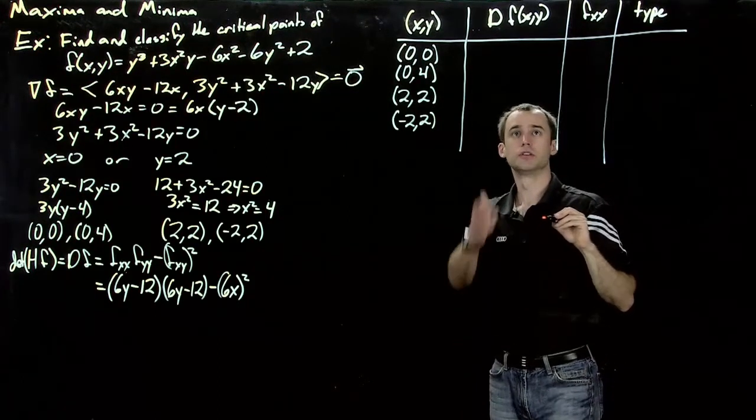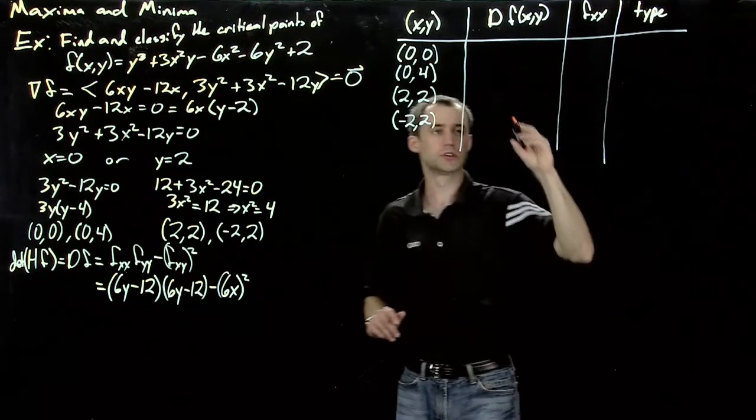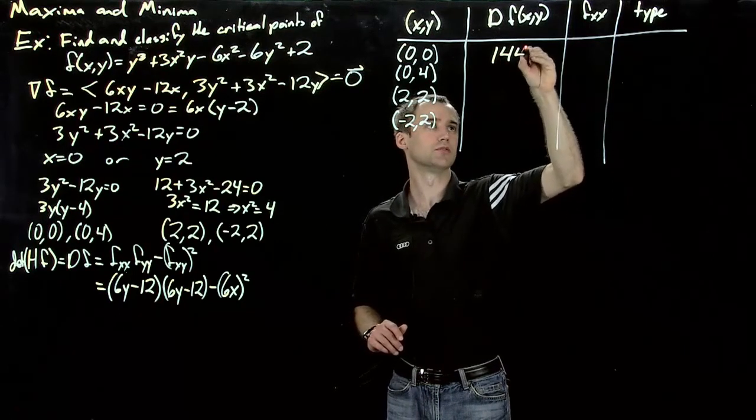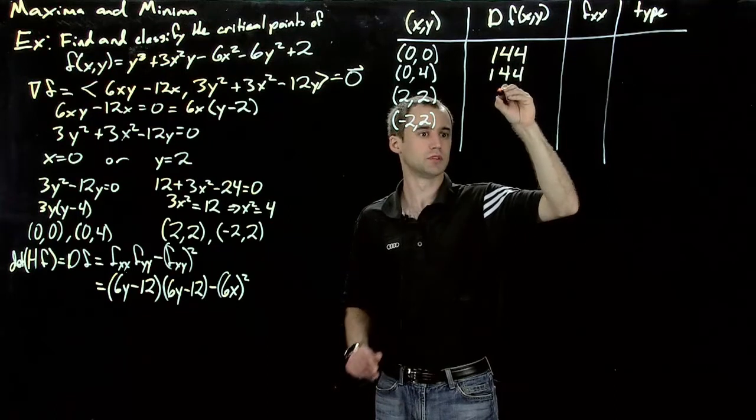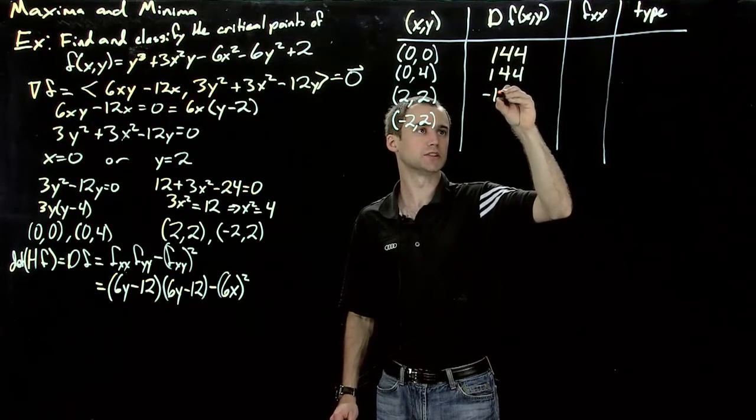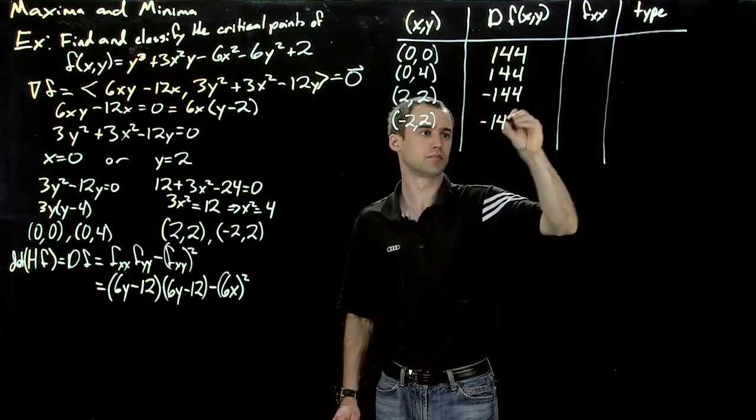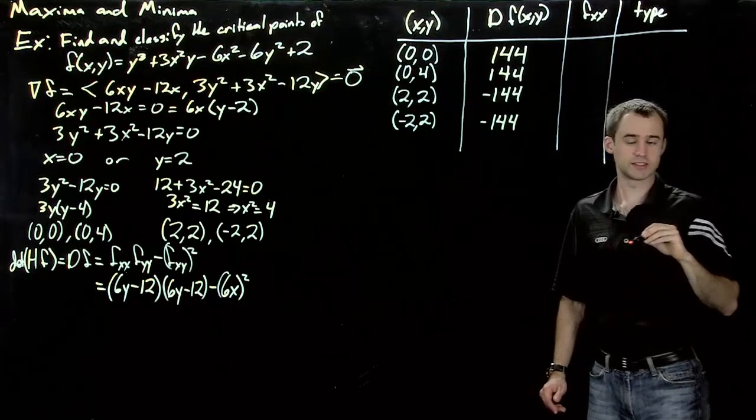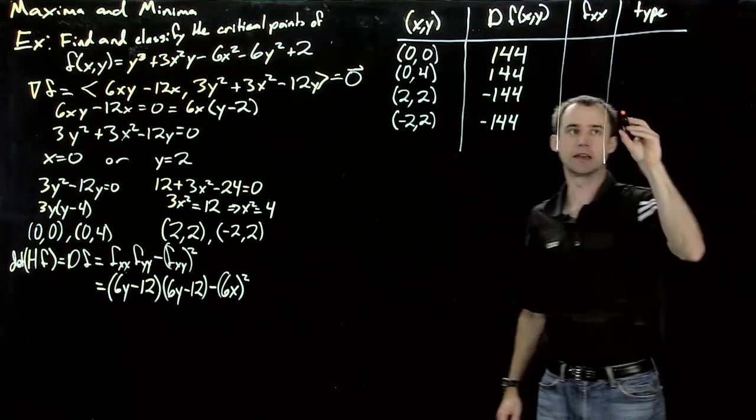So now the determinant of the Hessian for each of these is easy to compute. Turns out this one is 144, as is this one. And these two are minus 144. Recall from our cases that if the determinant of the Hessian is negative, it's automatically a saddle point.